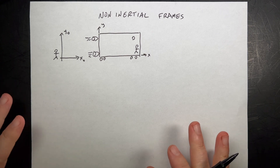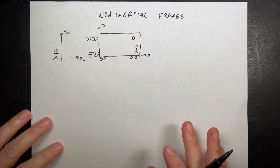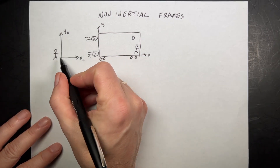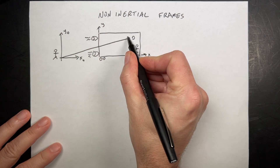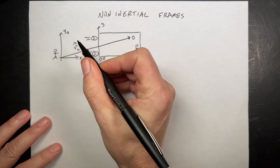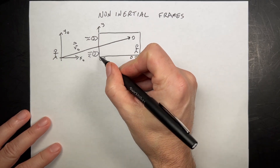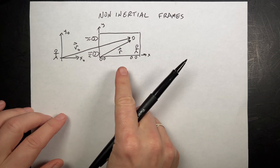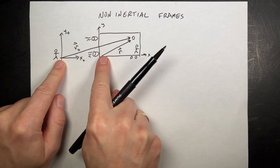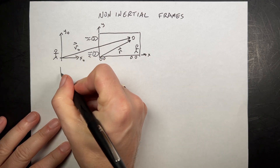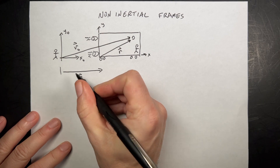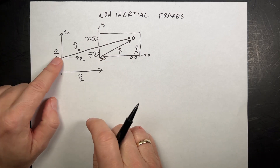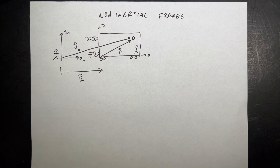Both people want to look at the ball through the clear windowed train car. The person in the stationary frame measures the ball's position with vector R0, and the person in the accelerating car measures it with vector R. There's also a vector capital R defining the location of the accelerating coordinate system with respect to the stationary one. This is non-inertial frames with linear acceleration — it gets more complicated when we rotate, and we'll do that later.